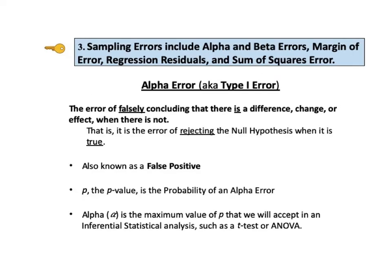Sampling errors are the most statistical of errors in statistics, and much of inferential statistics is devoted to quantifying and studying the calculated differences between a sample statistic and the corresponding population or process parameter. An alpha error, also known as a Type 1 error, is the error of falsely concluding that there is a difference, change, or effect when in fact there is not — it is the error of rejecting the null hypothesis when it is true. A beta error is also known as a false positive. The p-value is the probability of an alpha error.